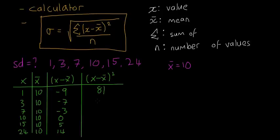So x minus x-bar squared. So this is going to be 81. It's going to be 49. We're going to have 9, 0, 25. And this one here is going to be 196. So this is just squaring each of these numbers one by one.